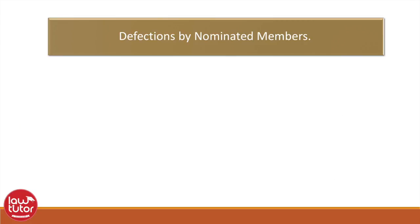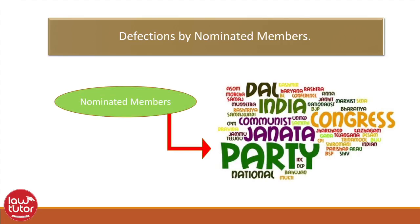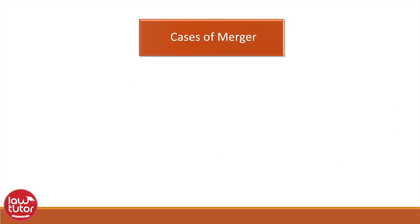This is the third kind: defections by nominated members. Members who are nominated to a house are deemed defectors if they join any political party after expiry of six months from the date on which they take their seat. This means nominated members who are not members of any political party have six months to become members of any political party.